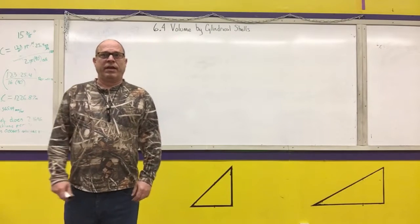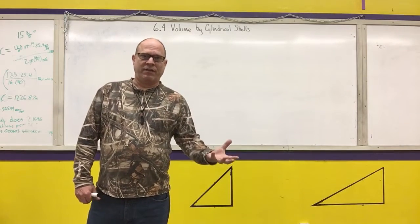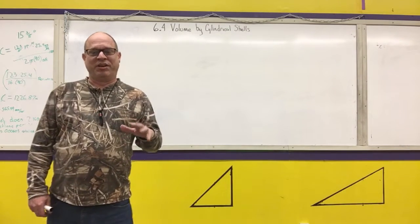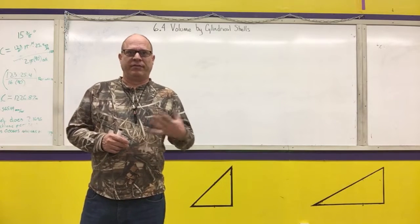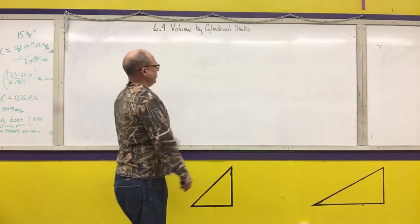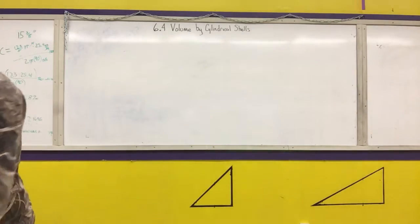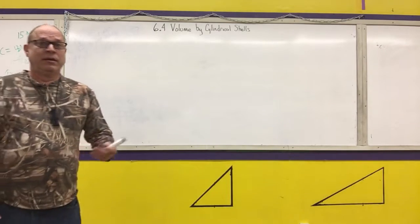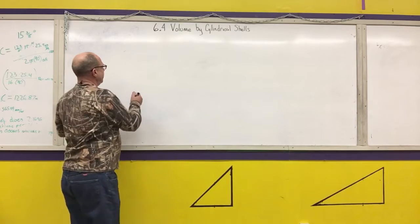The last type of volume we're going to calculate is if we rotate and we cannot find the volume by disks or washers, or it's impractical because of the way the equation is written, we will use the volume of cylindrical shells. I'm going to draw some pictures so we can figure out how to come up with the formula, and then I will go into some examples.